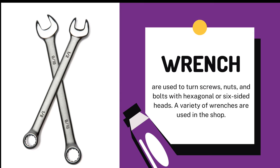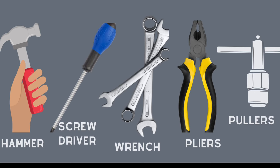Next, we have the wrench. A wrench is used to turn screws, knots, and bolts with hexagonal or six-sided heads. A variety of wrenches are used in the shop. To recap, the five examples of hand tools are hammer, screwdriver, wrench, pliers, and pullers.